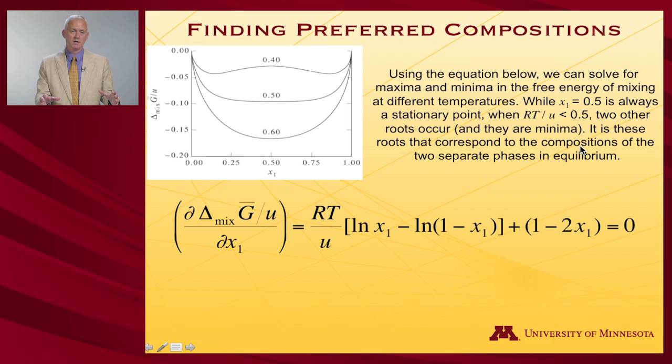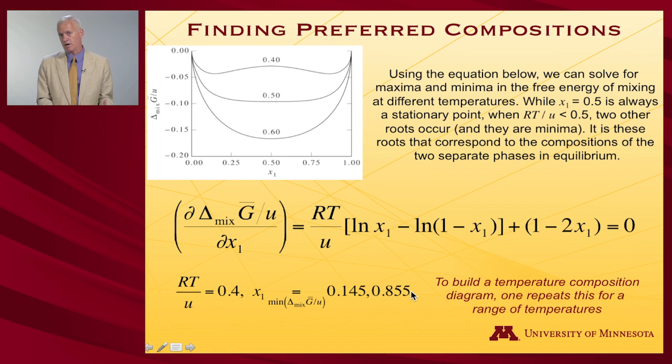With that equation, we can actually look for the stationary points. If I want to know above this 0.5, where are these minima in free energy of mixing, those two roots correspond to the compositions of separated phases at equilibrium. Because those are free energy wells, that's where two phases want to separate out and occupy those free energy wells. And so if we do that calculation for RT over u equals 0.4, you find out it's at 14.5% mole fraction and 85.5% on the other side. And in order to build a temperature composition diagram, you do this for different temperatures. As I raise the temperature, I will increase the ratio of RT over u. I can make those phases come back together again. That's how you would construct the phase composition diagram.